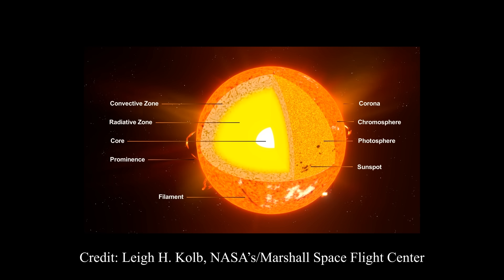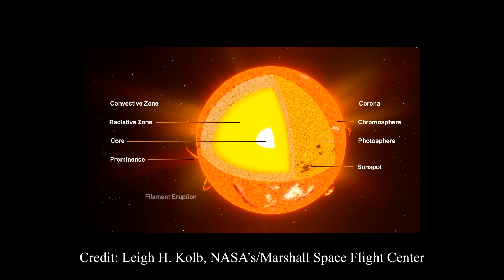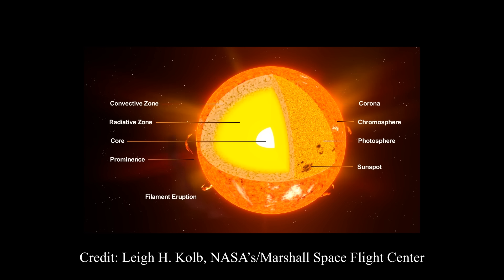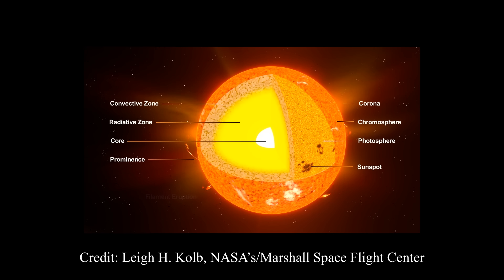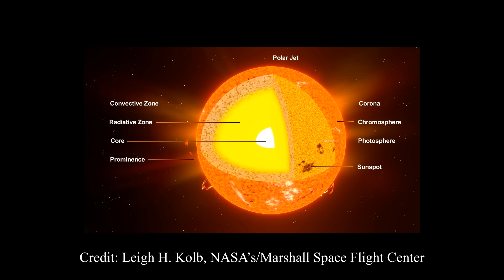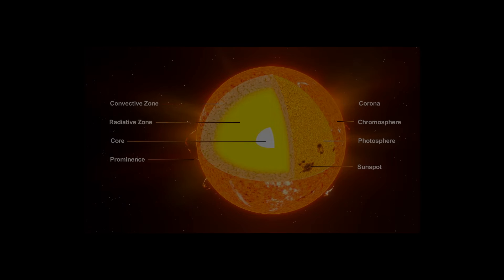All right, so there we have it. We'll see you next time, when we're going to talk about exactly what those convection cells are and how energy gets transported — because the Sun is cooling off and at some point it's got to replace that energy. We'll see you soon.